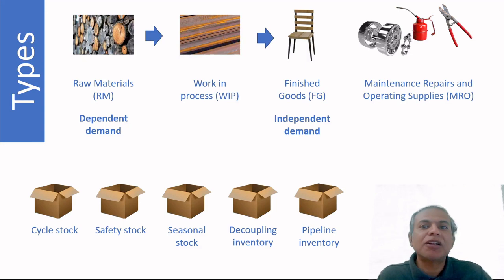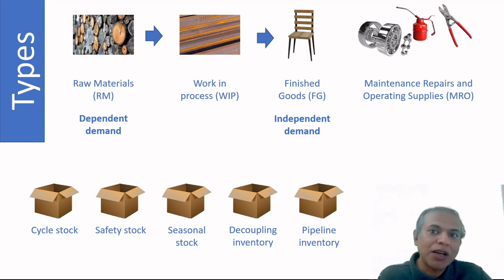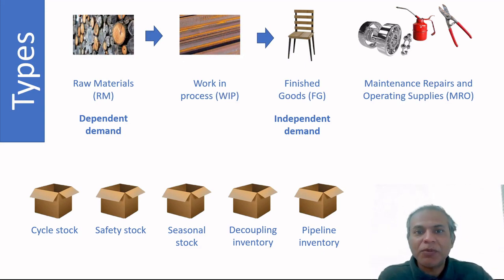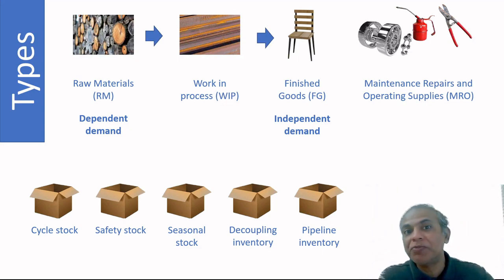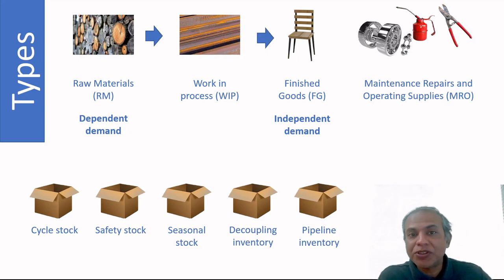Decoupling inventory is held specifically to disconnect two processes in the supply chain. For example, if you hold 30 days of raw material stock, even if your supplier stops manufacturing for 10 days, your production is unaffected. Any inventory kept to create that independence between stages in the supply chain is called decoupling inventory.